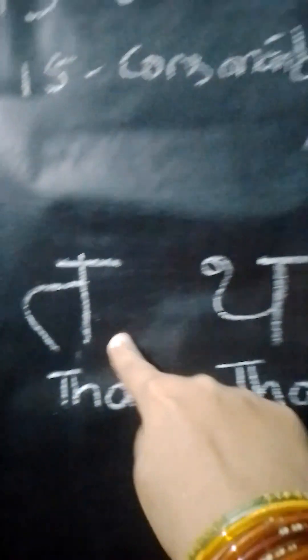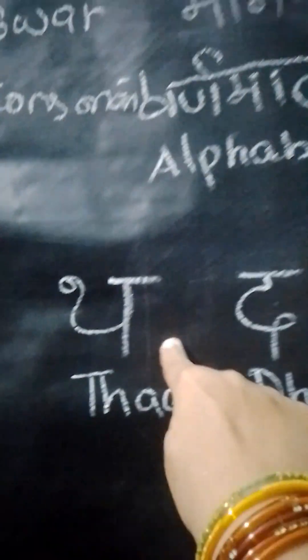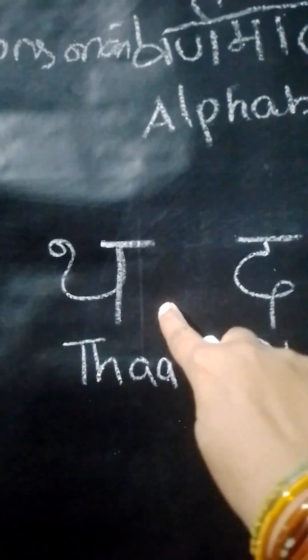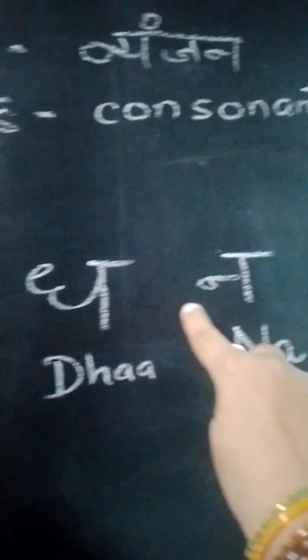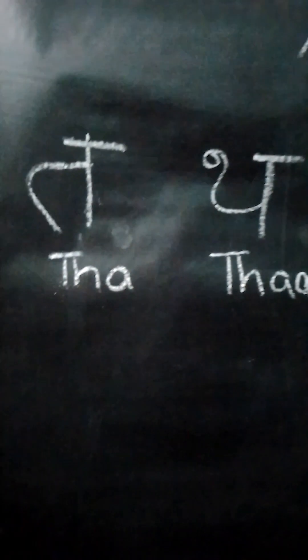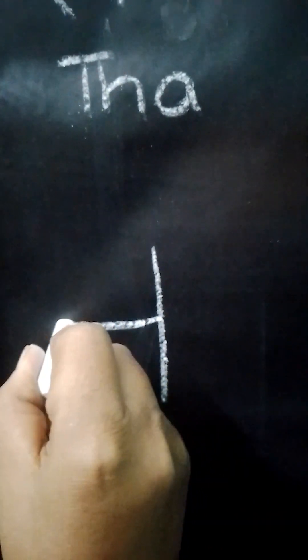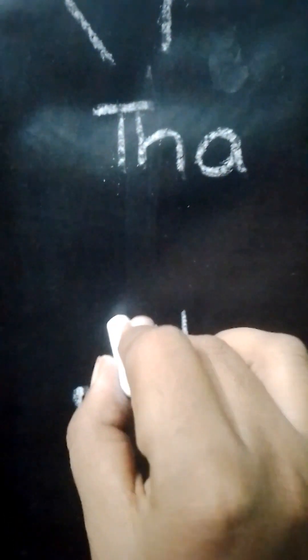The five consonants we are going to learn are: Tha, Tha, Da, Da, and Na. Let's see how we can write the first consonant, Tha. To write Tha, first draw a standing line, then in between the standing line draw a sleeping line, and then a slanting line. Join this alphabet with the sleeping line at the top.